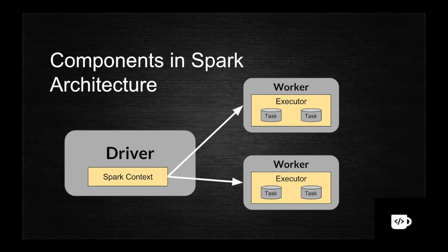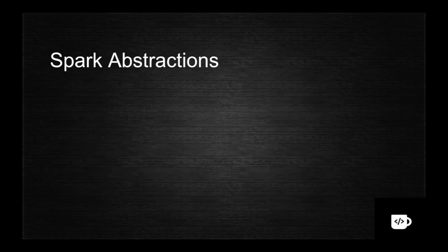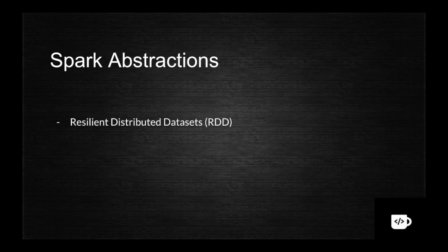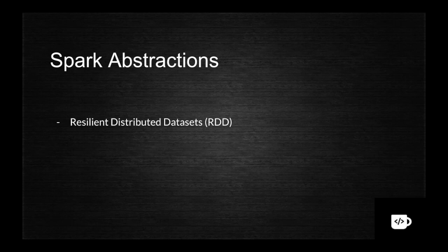There are different abstractions in Spark so you don't need to know what's happening internally. The first abstraction is Resilient Distributed Datasets, called RDDs. This is the core component of Spark - whenever you are operating on any data you will use an RDD. RDDs are data sets distributed across nodes. If there is a failure, these data sets get reconstructed. They are basically immutable data on which you can perform transformations.